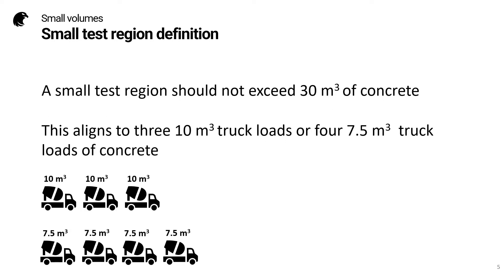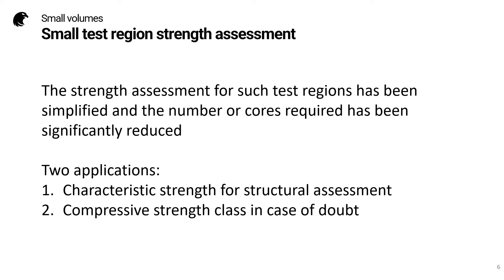What constitutes a small test region? It should not exceed approximately 30 cubic metres of concrete. This aligns to three 10 cubic metre truckloads or four 7.5 cubic metre truckloads. The strength assessment for such test regions has been simplified and the number of cores required has been significantly reduced.